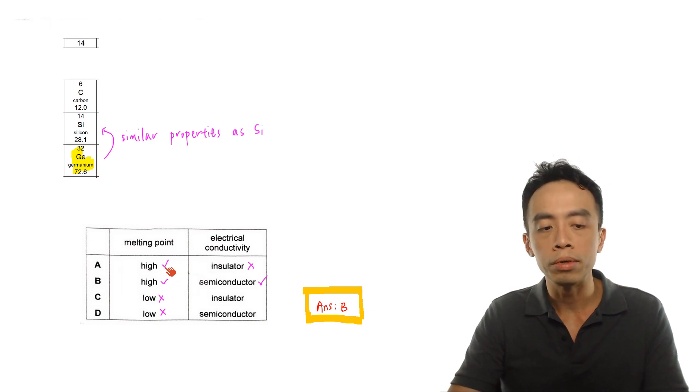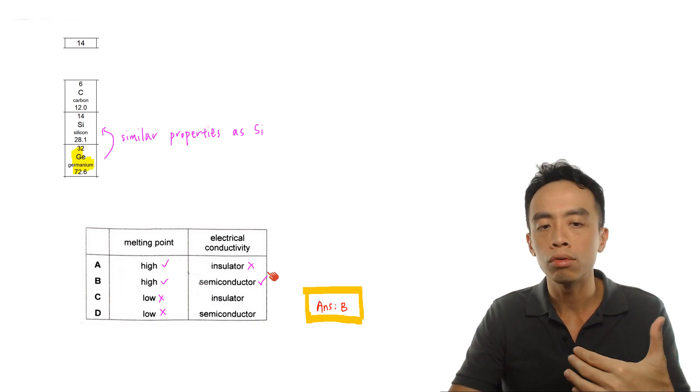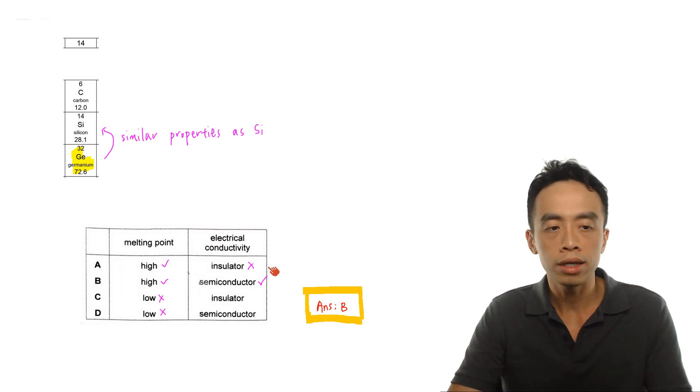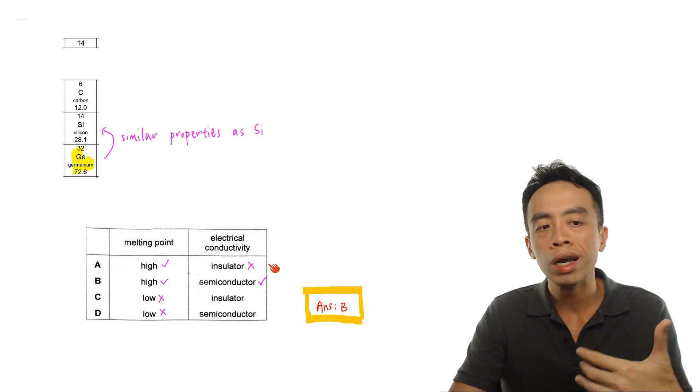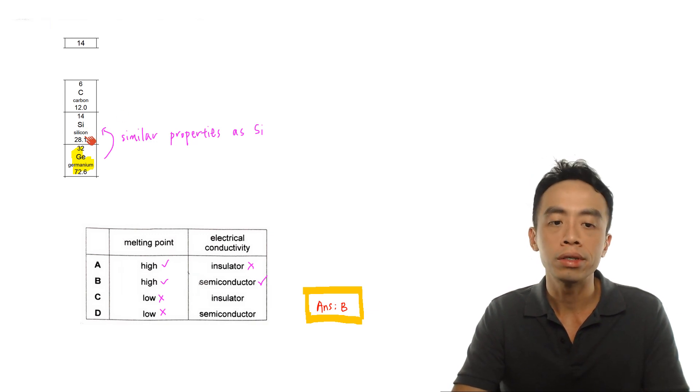The answer will be between A and B. For electrical conductivity, we extend this idea from silicon. Given in the question, period 4 elements and period 3 elements have similar properties. Since silicon is a semiconductor, we would expect germanium to also be a semiconductor.